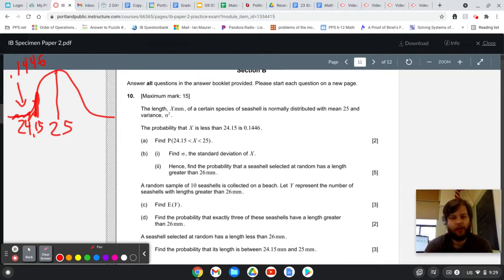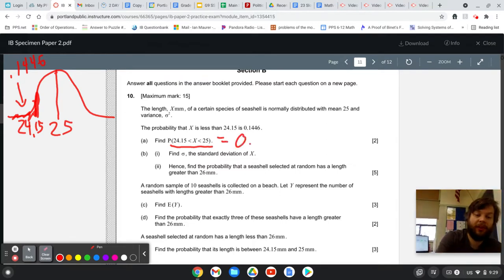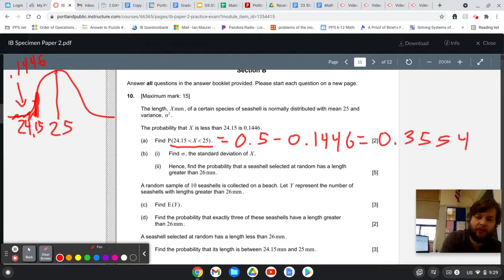And then we know also that the normal distribution is symmetric, and so the probability that it's less than 25 is half. And so what we can do to answer part A, where it asks about the probability between 24.15 and 25, that's going to equal 0.5 minus 0.1446, which gives me 0.3554.